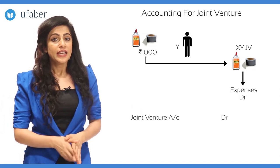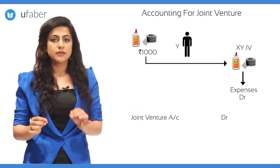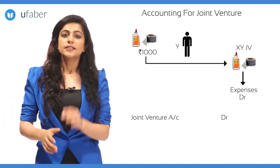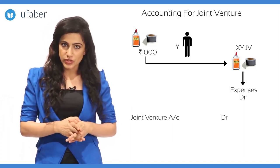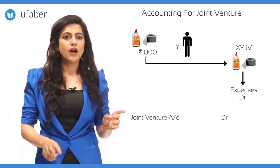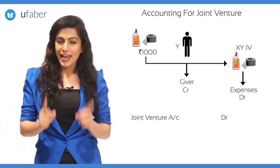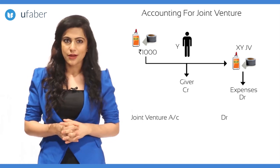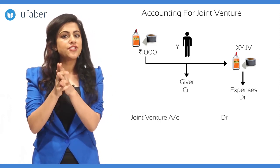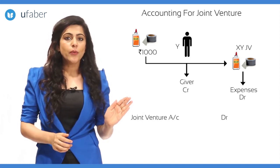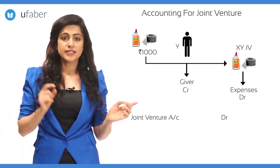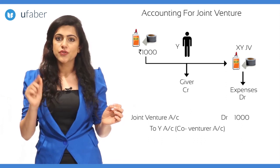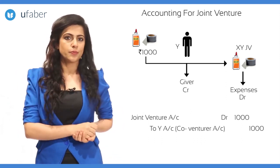These items have been brought in by Y, who is a co-venturer. Hence the golden rule for personal account — debit the receiver, credit the giver — applies. We credit Y's account (co-venturer's account). So the journal entry is: joint venture account debit one thousand rupees, to Y account (co-venturer account) one thousand rupees.